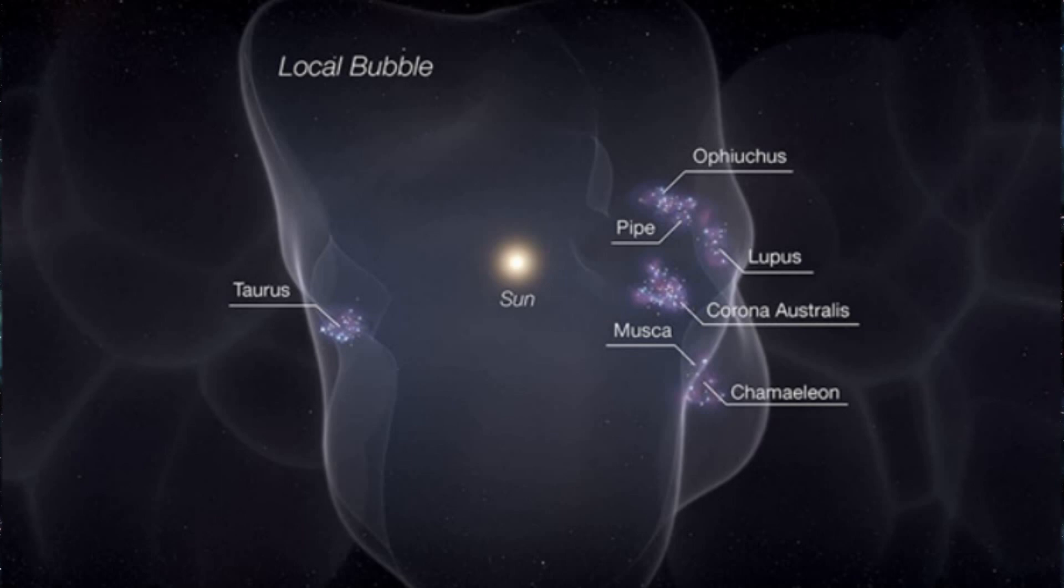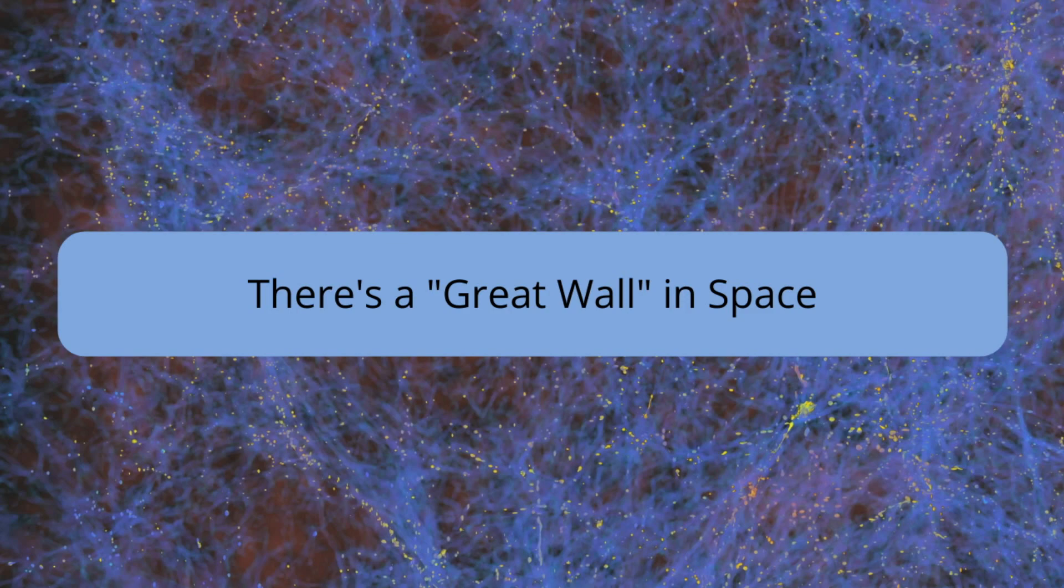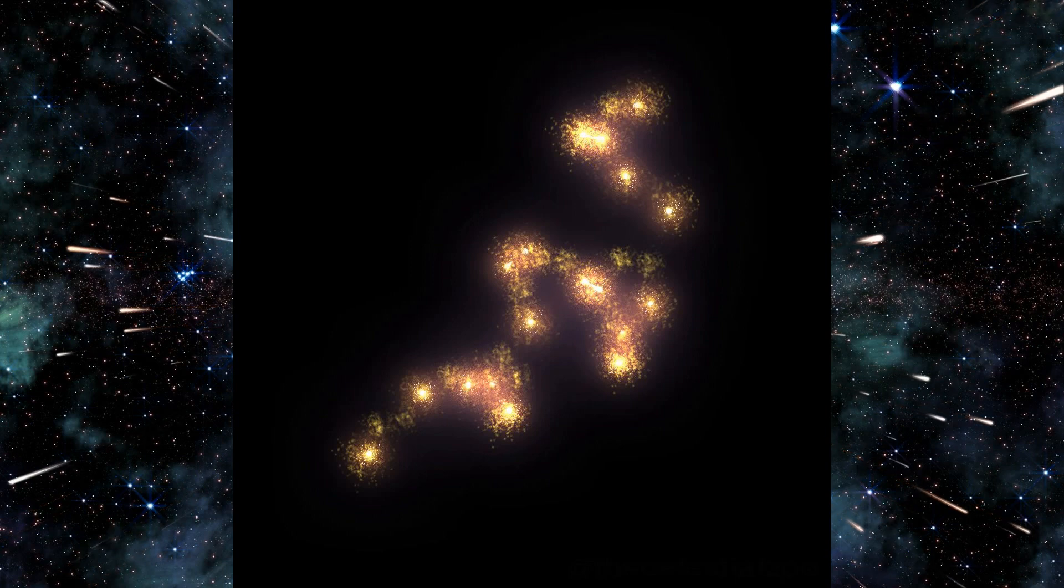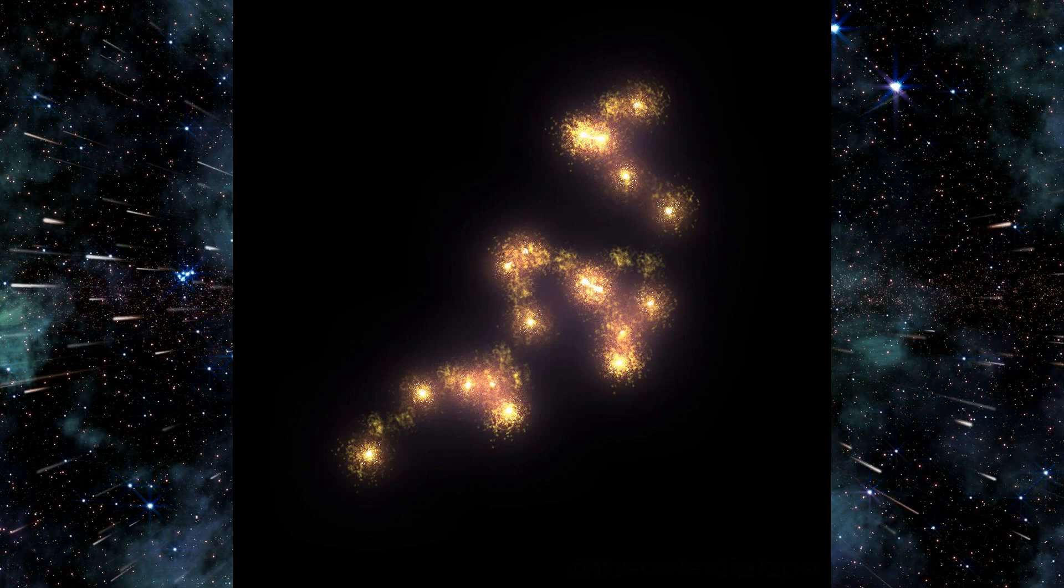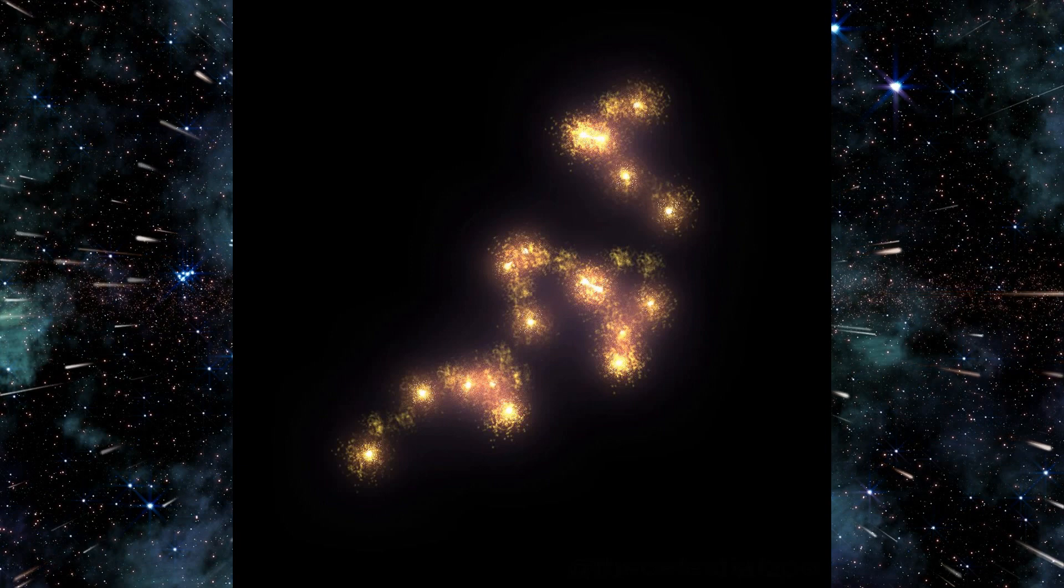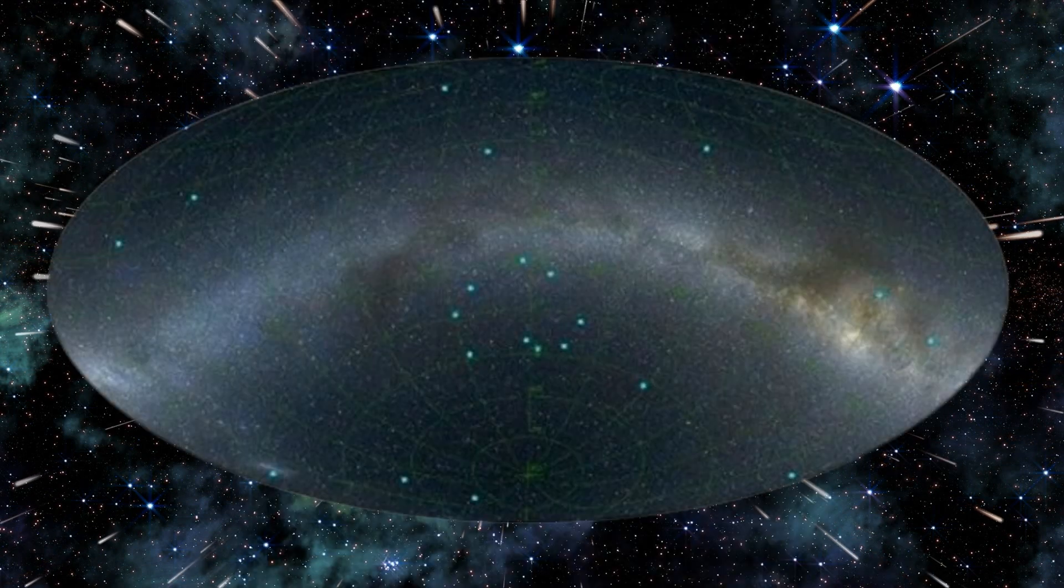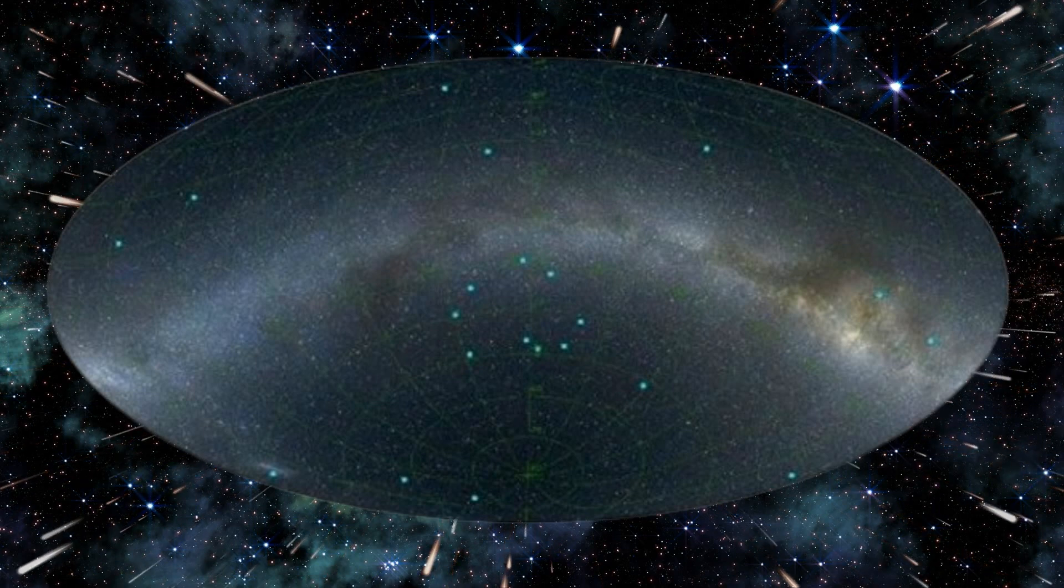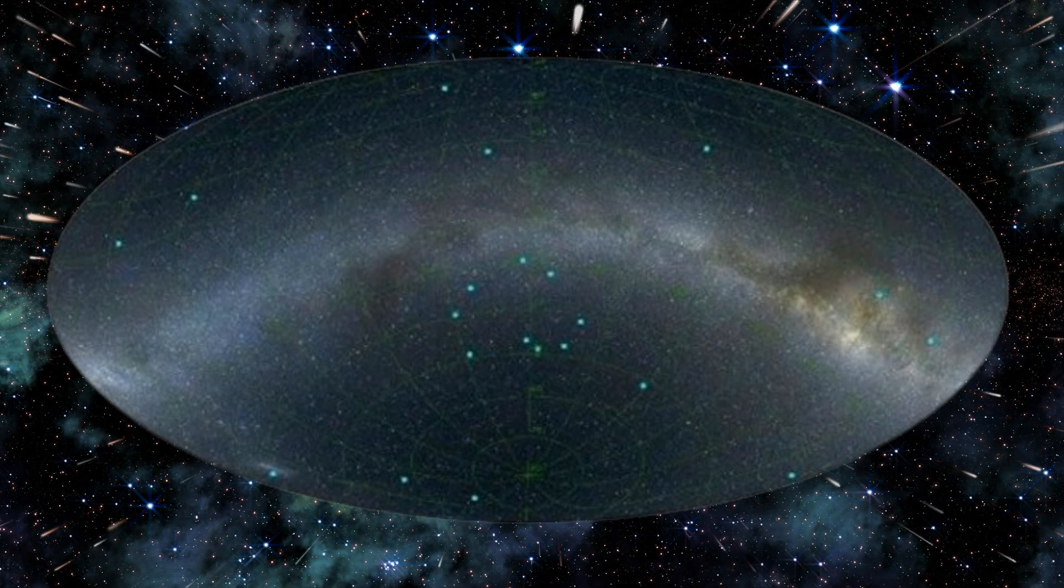Did you know there's a Great Wall in space? Imagine a wall so big it dwarfs everything you can see with the naked eye. That's the Great Wall, formerly called the Hercules Corona Borealis Great Wall. This enormous structure is a filament of galaxies, a vast concentration of galaxies stretching billions of light years across space. Estimates suggest the Great Wall is a staggering 10 billion light years long, 1.5 billion light years wide, and 150 million light years thick. Just to put that in perspective, our Milky Way galaxy is only about 100,000 light years across.